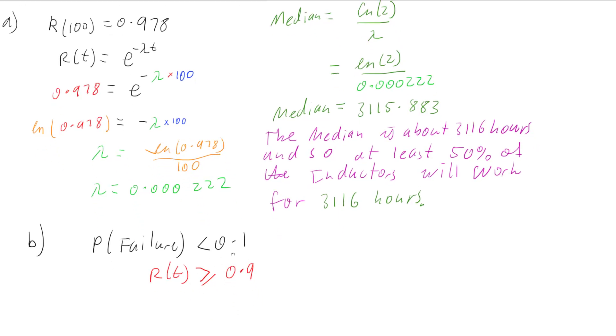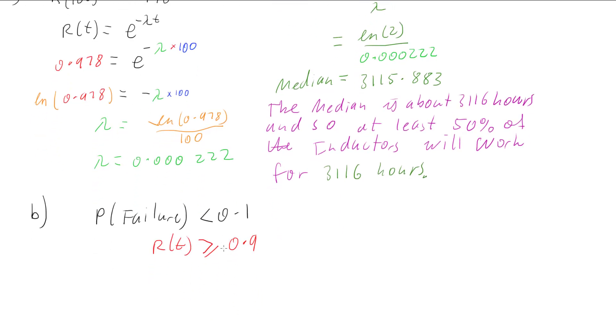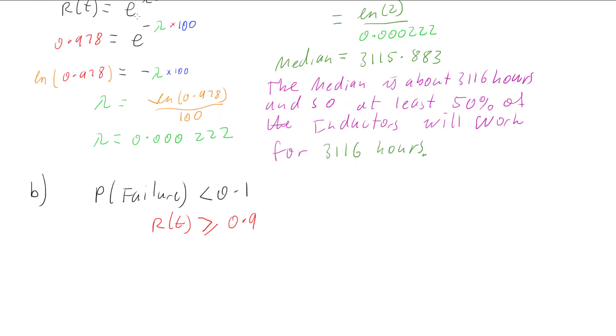So our probability of failure being less than 0.1 is our probability of success, our reliability of being greater than or equal to 0.9. So if we substitute in using our reliability function, e to the negative lambda, which we worked out before is 0.000222 multiplied by time, is going to have to be greater than or equal to 0.9. So I want to find the time.